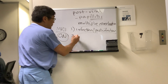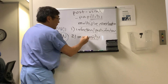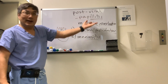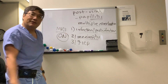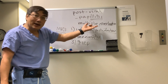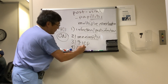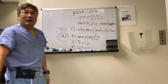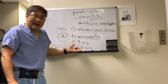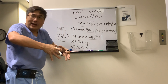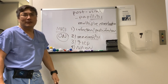Number two is meningeal inflammation. Viral meningitis can cause papillitis, and increased intracranial pressure related to outflow obstruction can cause papilledema that looks like post-viral papillitis. You could also have localized vasculitis causing an ischemic event — not your garden-variety non-arteritic anterior ischemic optic neuropathy, but a localized optic nerve head ischemia from vasculitis related to the post-viral disease.